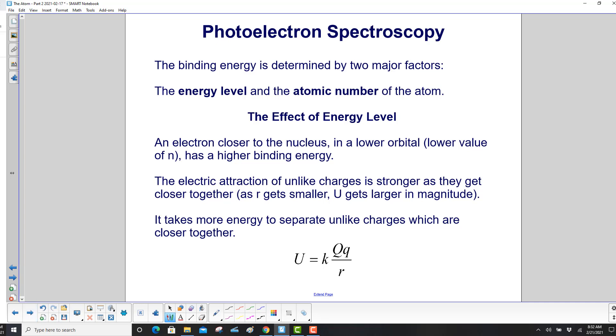The binding energy is determined by two major factors, the energy level and the atomic number of the atom. Let's first look at the effect of the energy level. An electron closer to the nucleus in a lower orbital, that means you have a lower value of n, has a higher binding energy.